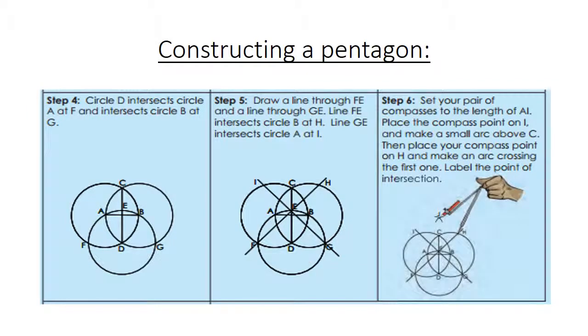We are going to carry on. Now circle D intersects circle A at F, and it intersects circle B at G.